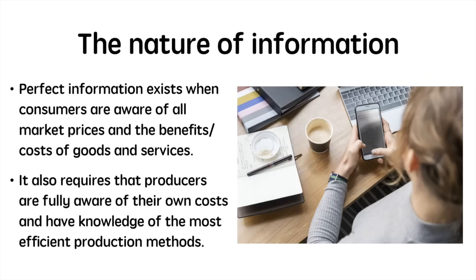Perfect information also requires that producers are fully aware of their own costs and have knowledge of their competitors' production methods. For example, no competitor can gain a competitive edge by developing a processing method that allows them to reduce costs without this information being accessed by competing firms immediately.